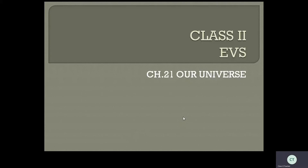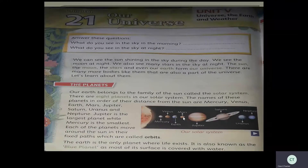Here are two questions: answer these questions. First, what do you see in the sky in the morning? Early morning, get up and look at the sky. The next question: what do you see in the sky at night? Just before going to sleep, look at the sky. Early morning you can see the sun, and at night when you look at the sky you can see the moon and the stars.